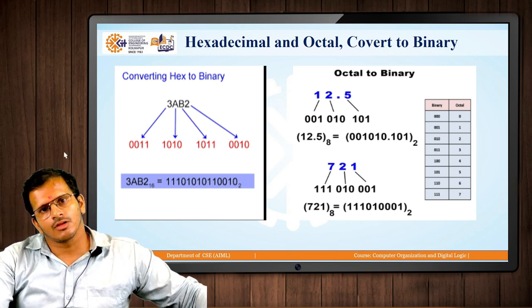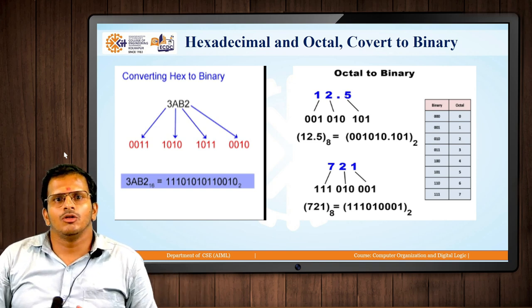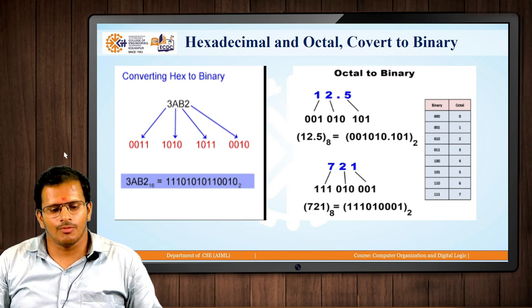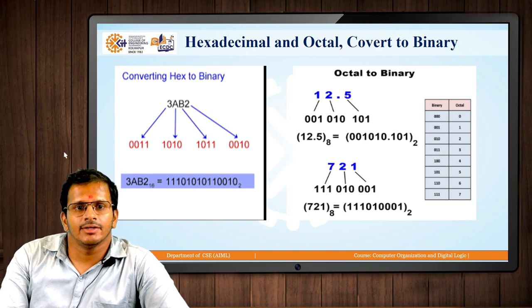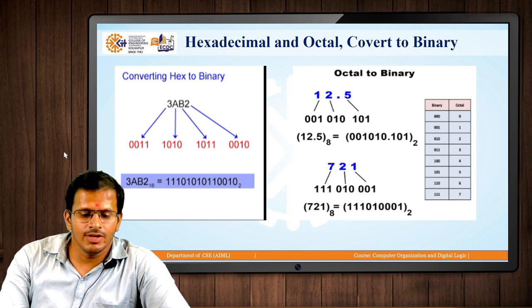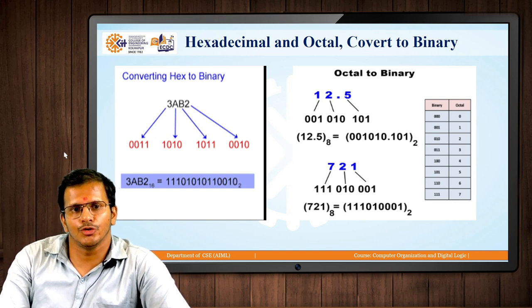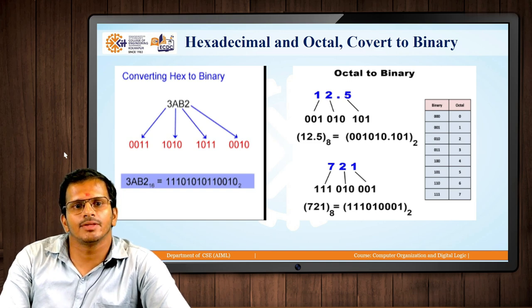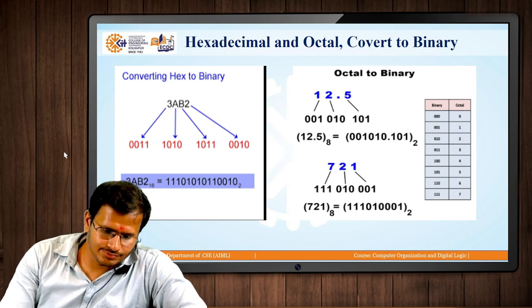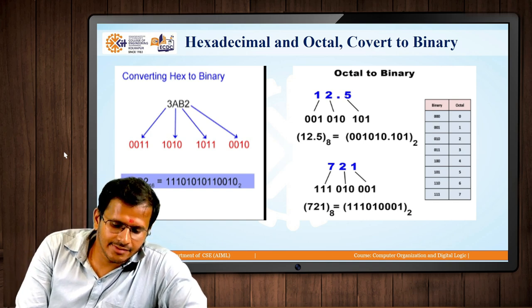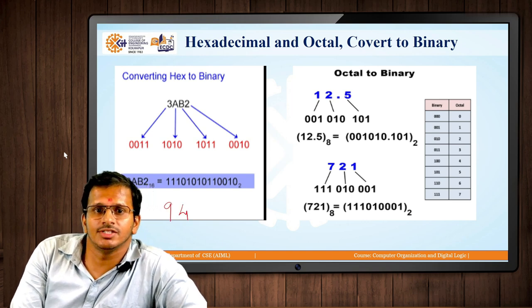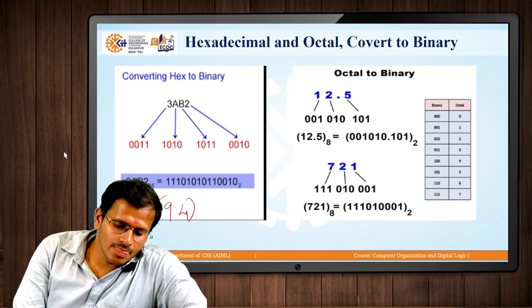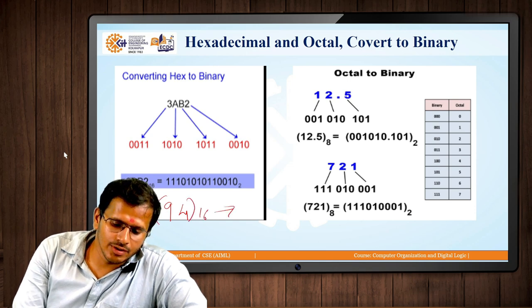First, we'll look at converting hexadecimal numbers to binary. Hexadecimal uses 0 to 9 and A to F, representing numbers 10 to 15. Consider the hexadecimal number 94 that we want to convert to binary.